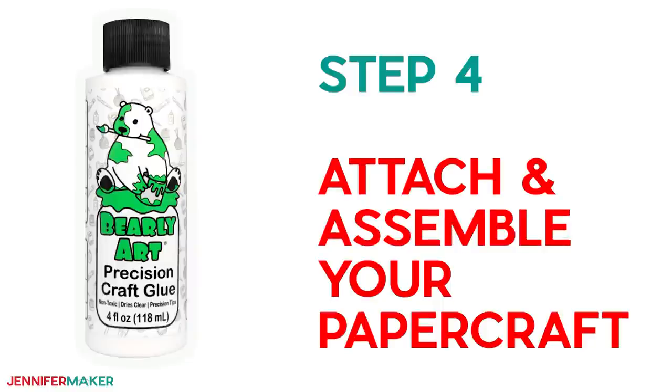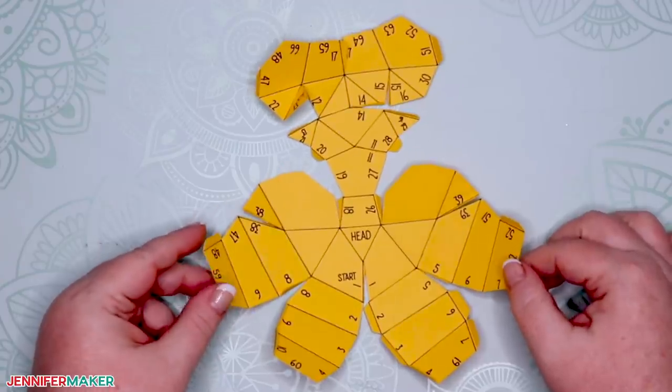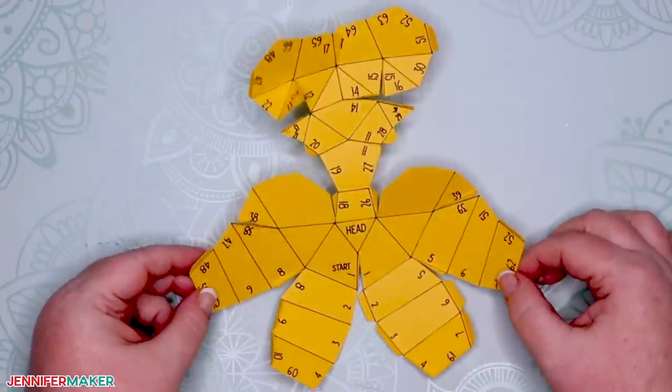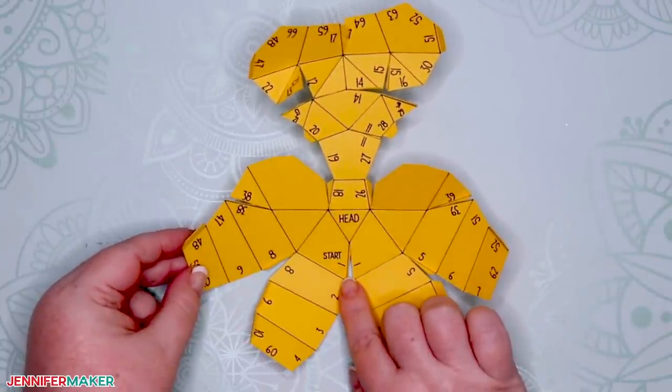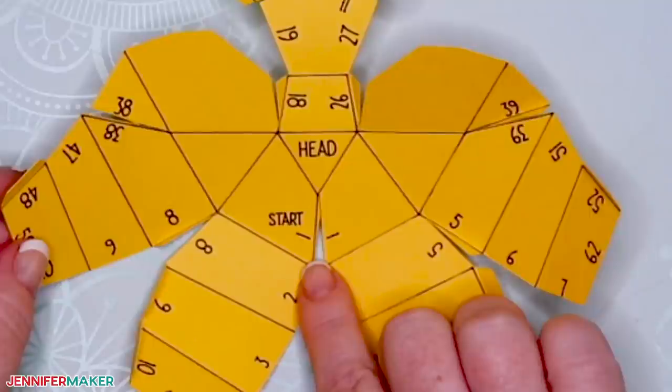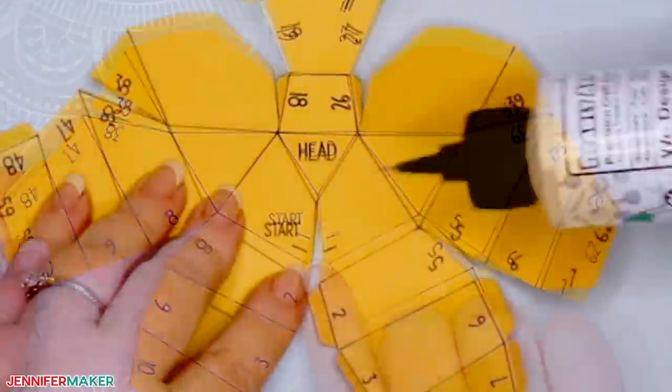Step four, attach and assemble your paper craft. Generally, on any paper craft, there'll be a point at which you should begin. It either indicates it on the pattern or the instructions say. So beginning with the headpiece of your cat, look for the word start written on the side with the numbers. Beside it, you will see the number one and near it is another number one.